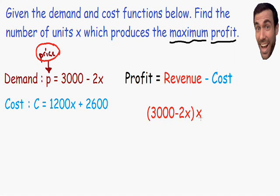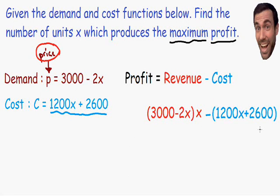Now let's do the same thing for the cost — rewrite it in terms of one variable x. The cost is already given to us in terms of x. We know the cost c is equal to 1200x plus 2600. So we can replace the cost with 1200x plus 2600. The revenue is being subtracted by the cost, which is 1200x plus 2600. Now we have written the profit equation in terms of one variable x.